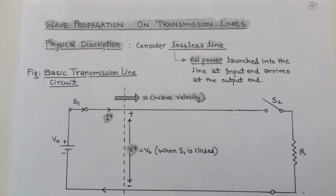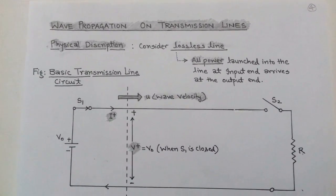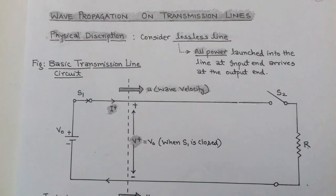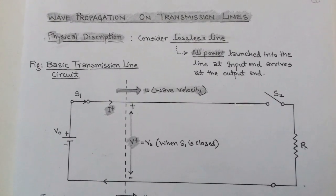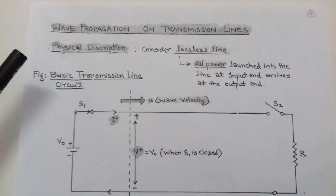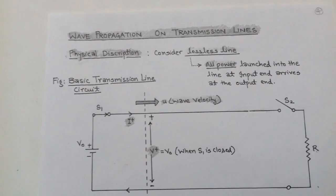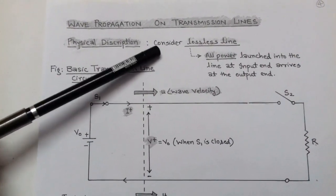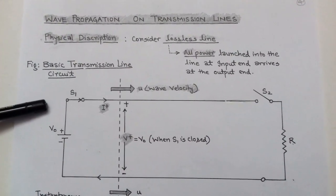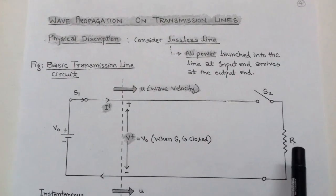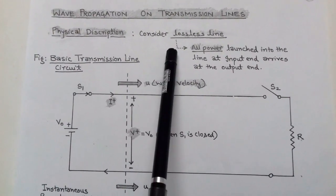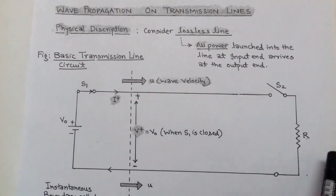The topic is wave propagation on transmission lines — how the electromagnetic wave behaves while propagating on transmission lines. We consider a lossless line, meaning there is no loss. All the power launched at the input side arrives at the output end. That transmission line is called a lossless line: there is no loss of power while propagating from source to load.